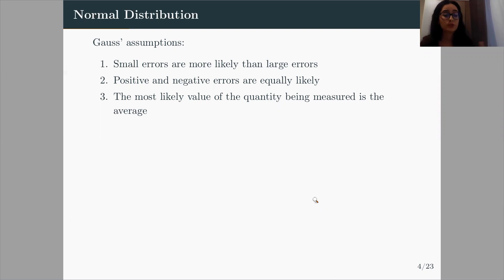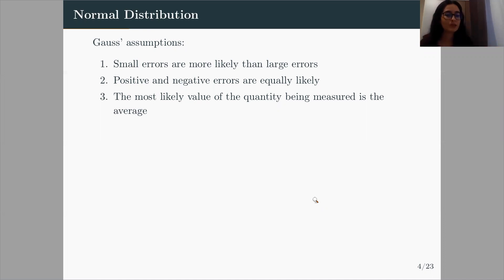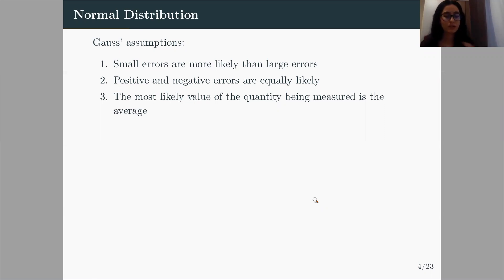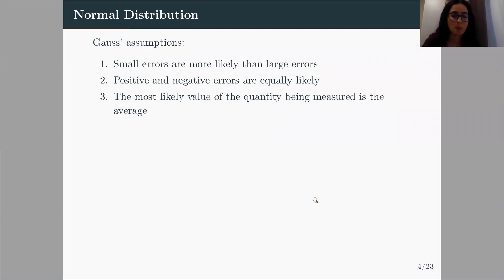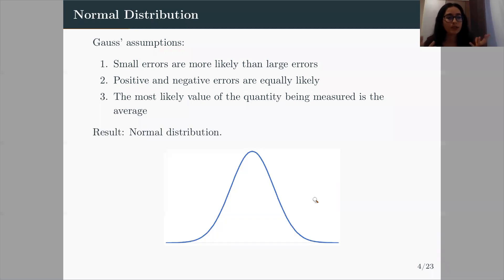Gauss made some assumptions. He said that errors do not distribute uniformly — not all errors have the same probability of occurring. He said small errors are more likely to occur than large errors. And for measuring a one-meter stick, measuring 95 centimeters is as likely as measuring 105 centimeters — plus and minus errors are equally likely. He also said that if you measure a quantity over and over again and take the average, that average is your best estimate of the true value. After making these assumptions, he rigorously found a distribution function which is exactly the normal distribution we use today.